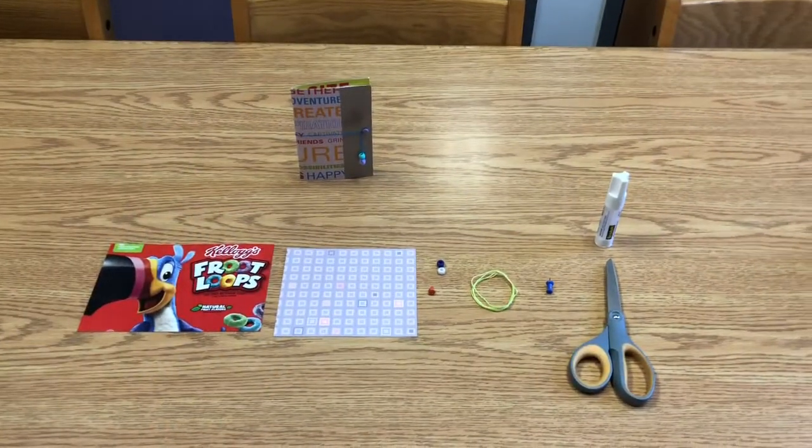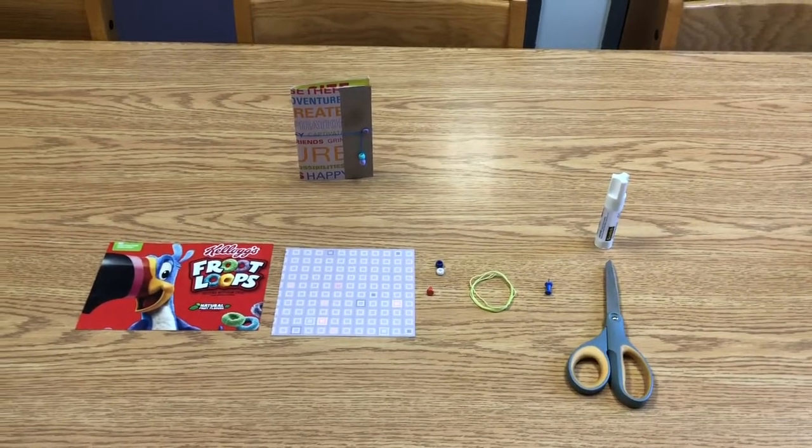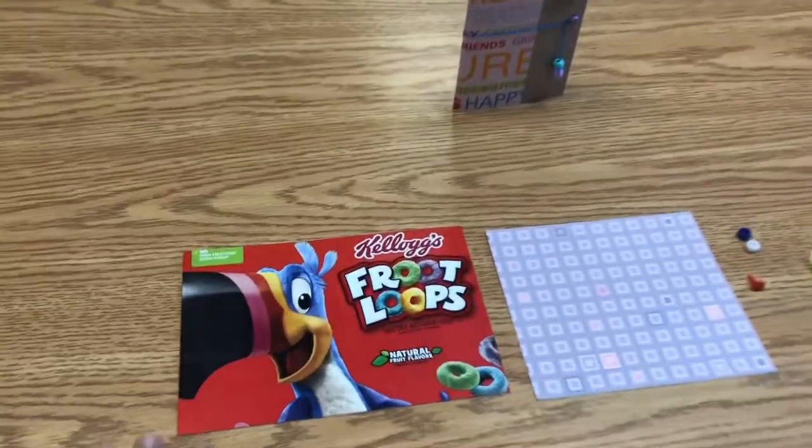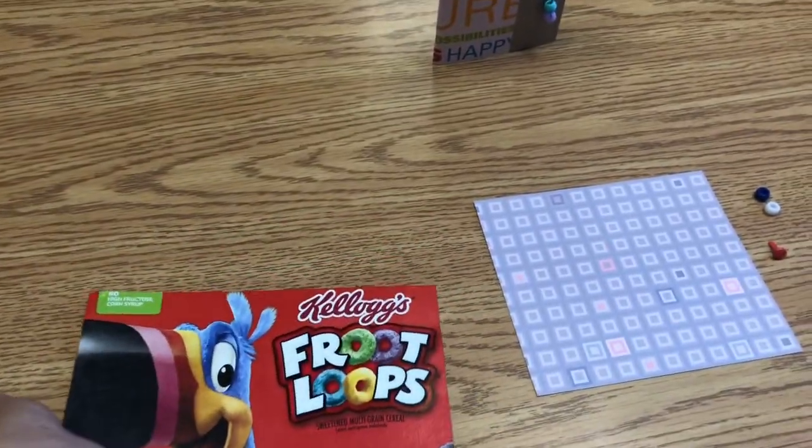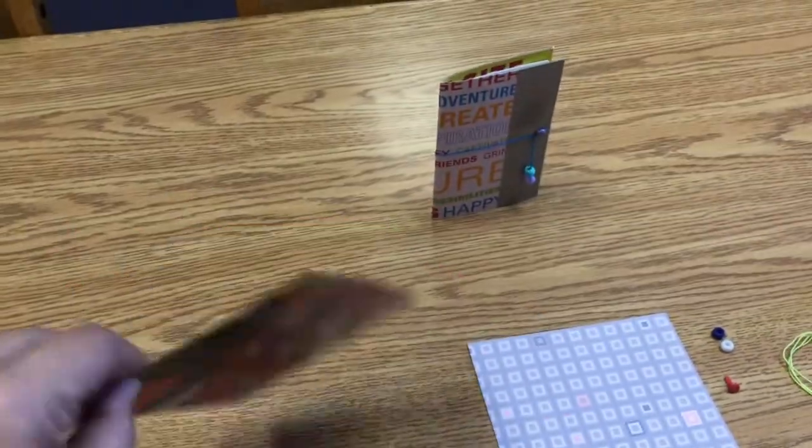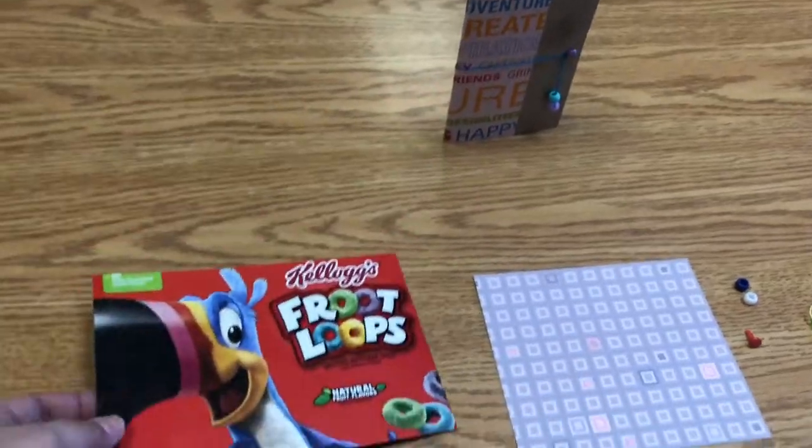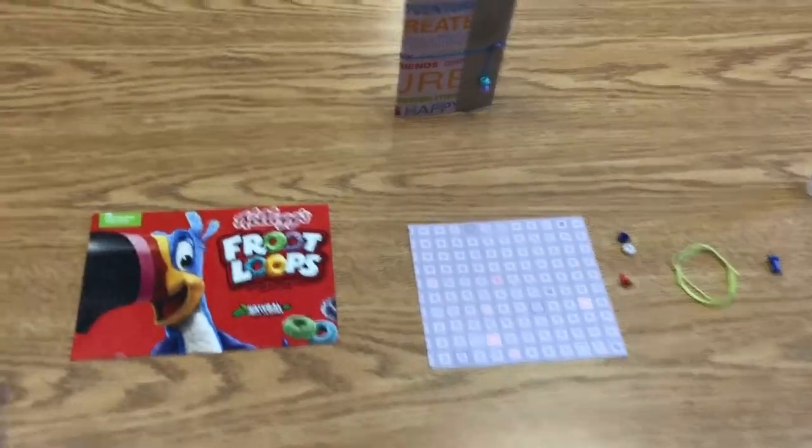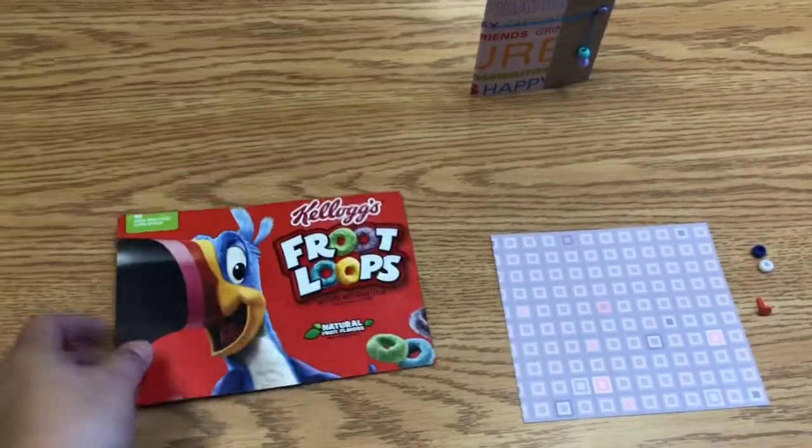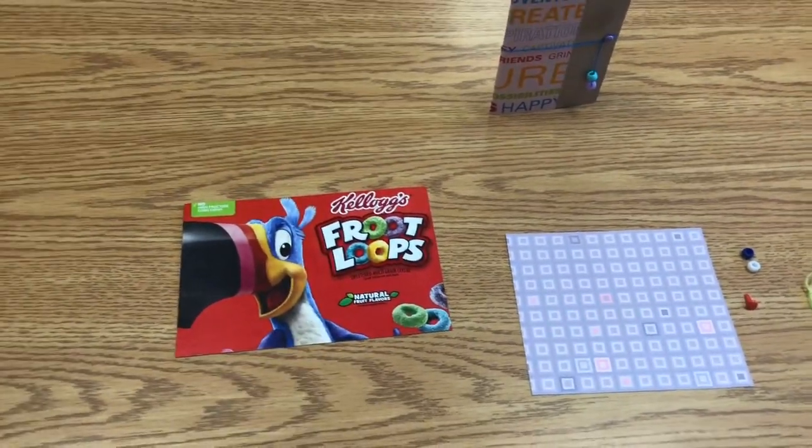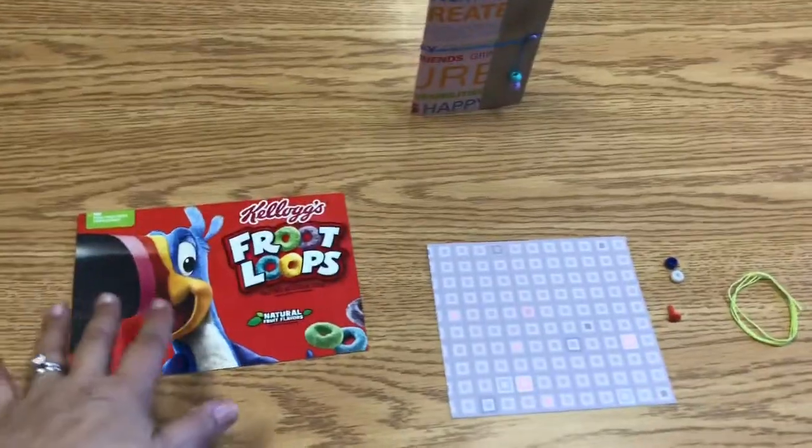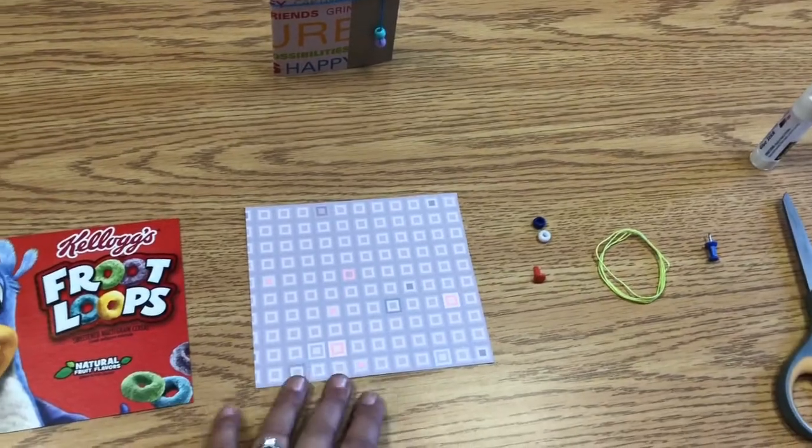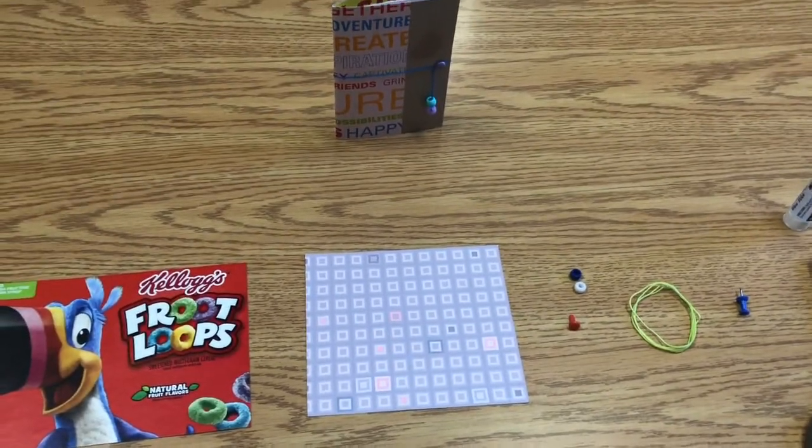So here are some of the supplies you're gonna need in order to make the notebook. First of all the cover of the notebook is made out of cardboard from a cereal box. So you'll want to cut a cereal box to the size that you want to use for the outside of your notebook. The ones that we have in the craft kit we've cut to about seven and a half inches by five and a quarter inches. Then you are also going to need some decorative paper used to decorate the outside of the notebook.